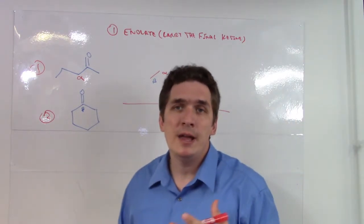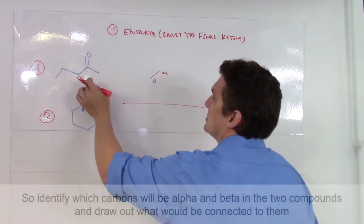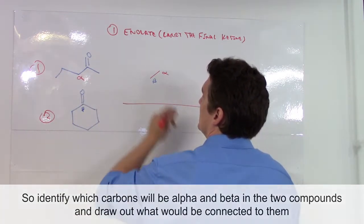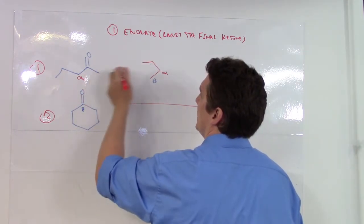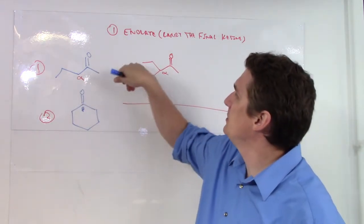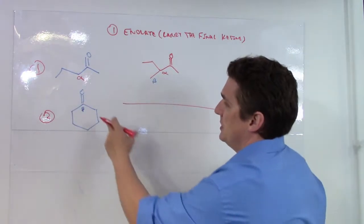From there, all we have to do is draw what's attached to the alpha and the beta. So the alpha here has that group and that group. So you can see here, I've drawn basically this compound with a bond connected to the alpha.